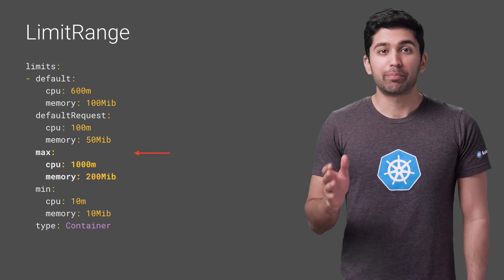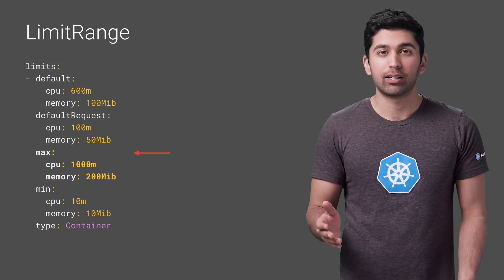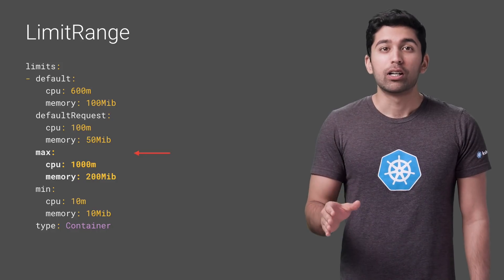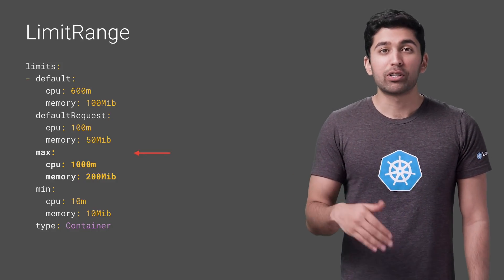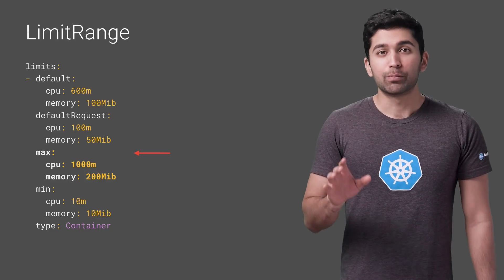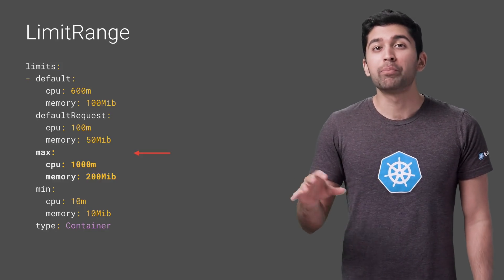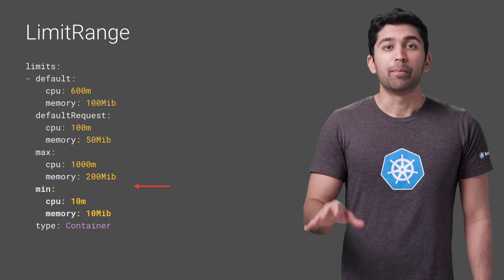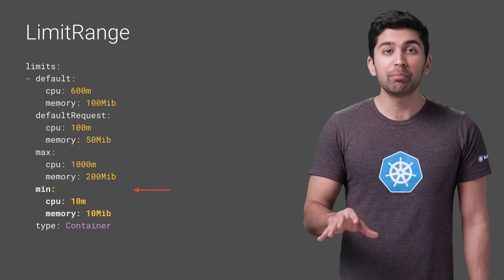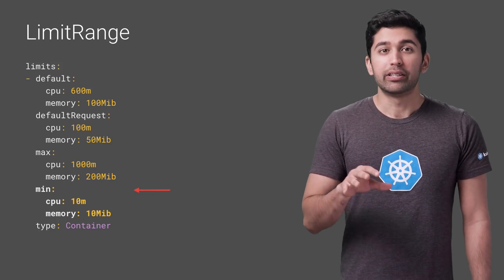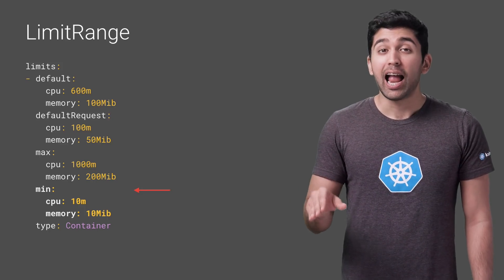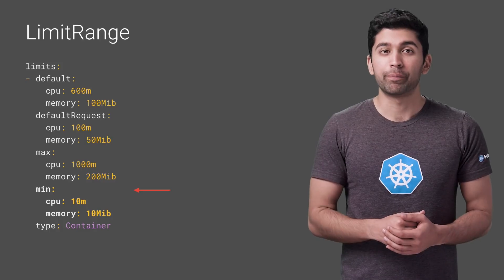The max section sets up the maximum limits that a container in a pod can set. The default section cannot be set higher than this value, and limits on the container cannot be higher either. Importantly, if the max value is set but the default section is not set, the max value becomes the default as well. The min section sets up the minimum requests that a container in a pod can set. The default request section cannot be lower than this, and requests on a container cannot be lower either. Similarly, if min is set but the default request section is not set, the minimum value becomes the default request.